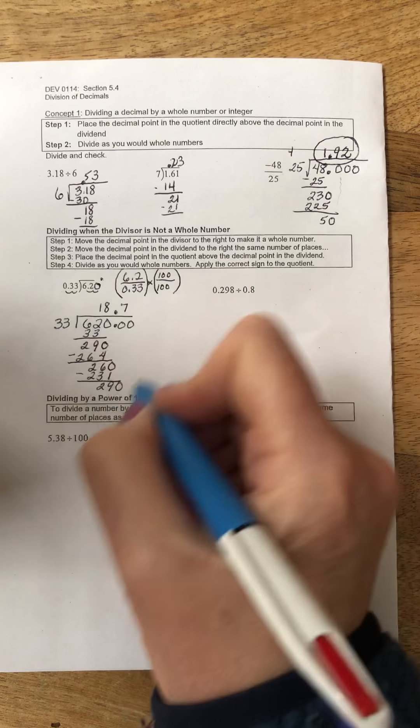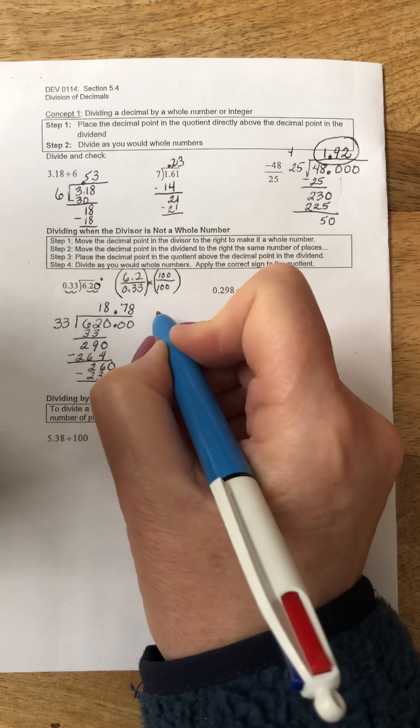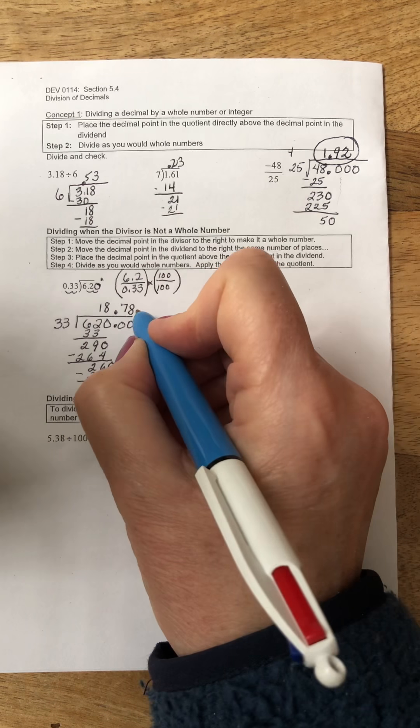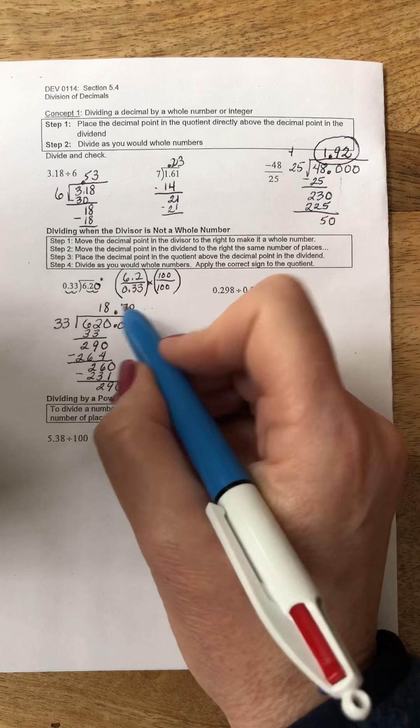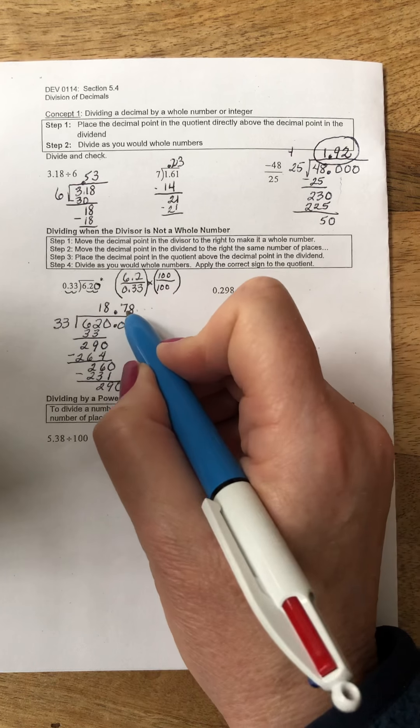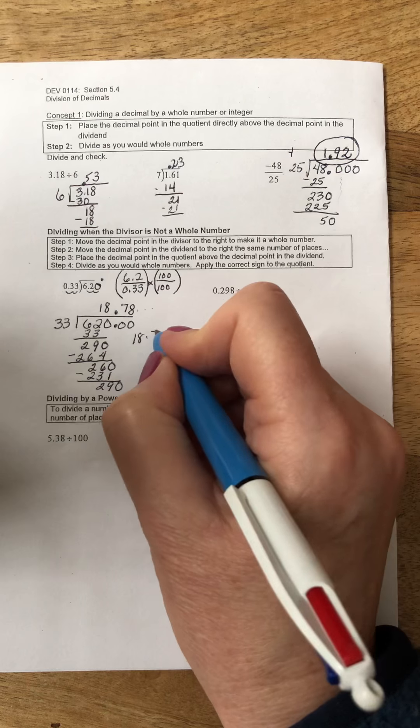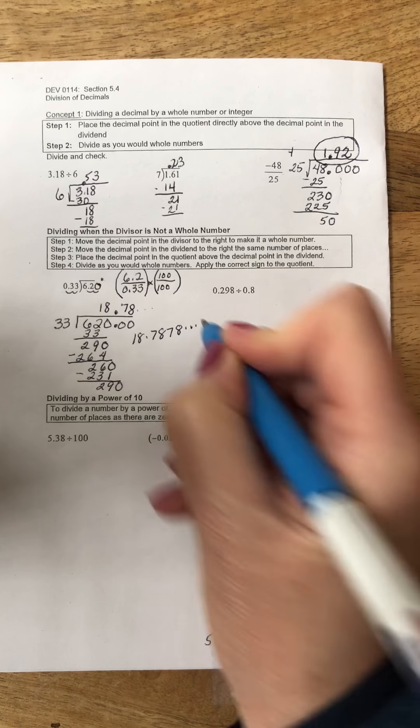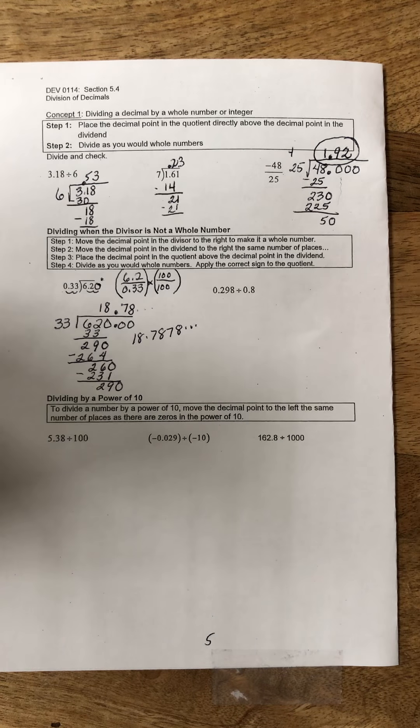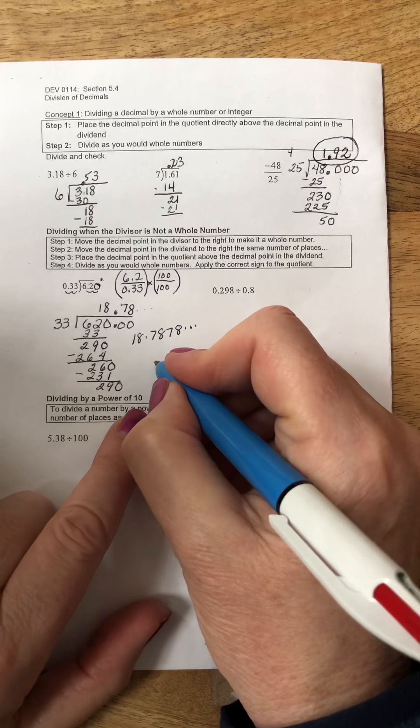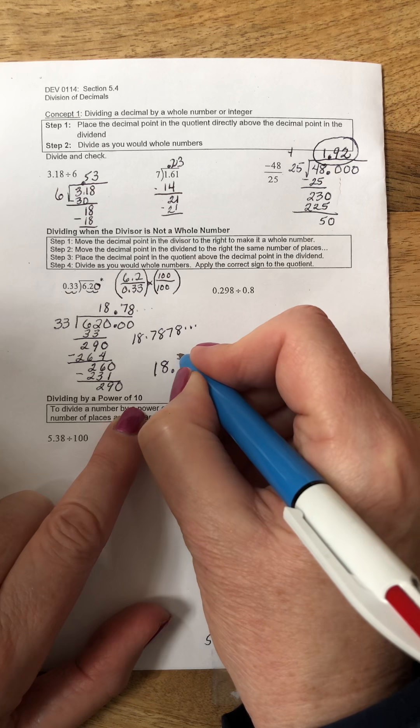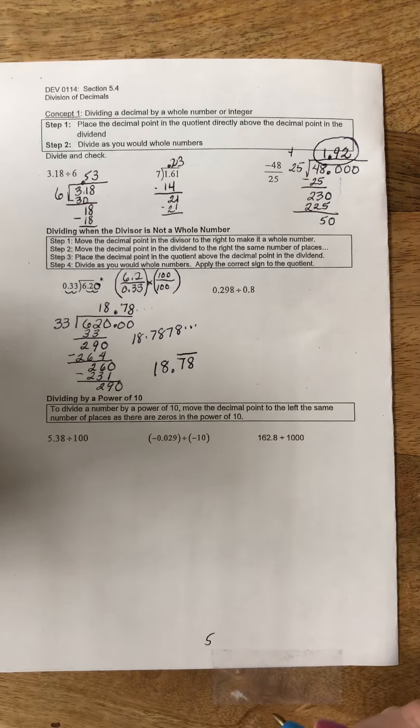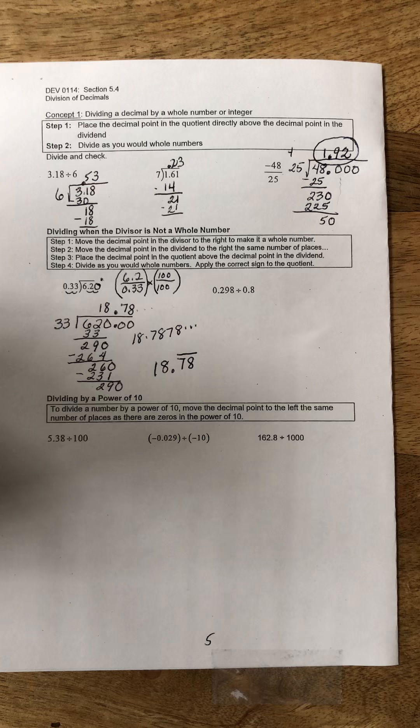What I'm seeing here is that I have what's called a repeating decimal. If I keep dividing I'm going to have 18.7878. Once I recognize the pattern, I'm just going to write my quotient this way: 18.78 and I'm going to put a horizontal bar on top of the 78, and that indicates that that decimal part is repeating.